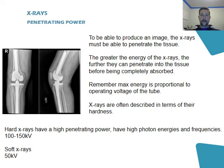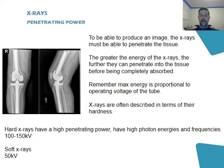The second factor affecting the image produced is the penetrating power. To be able to produce an image, x-rays must penetrate the tissue, and the greater the energy the x-rays have, the further into the tissue they get before they're absorbed. X-rays are often described in terms of their hardness. A hard x-ray has a high penetrating power and goes further into the tissue before it's absorbed, and the penetrating power is in the order of 100 to 150 kilovolts.